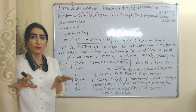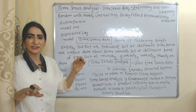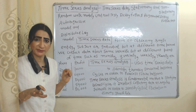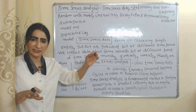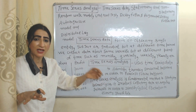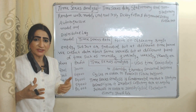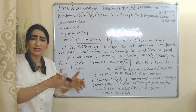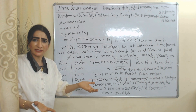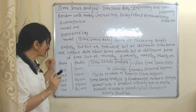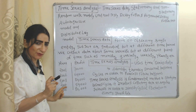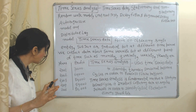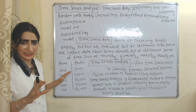Time series data focuses on a single individual subject or entity but at different time periods. That means we collect data about the same variable but at different points of time, such as monthly, quarterly, weekly, yearly, etc. For example, if we have information about five years of profit, the subject is the same — we are only collecting data about profit — but the time periods are different, so it is called time series data.